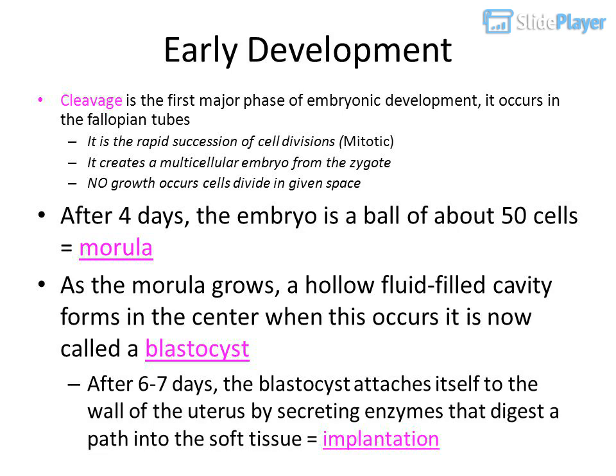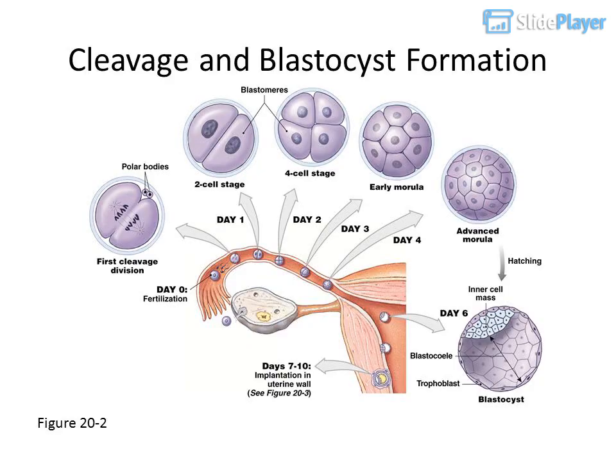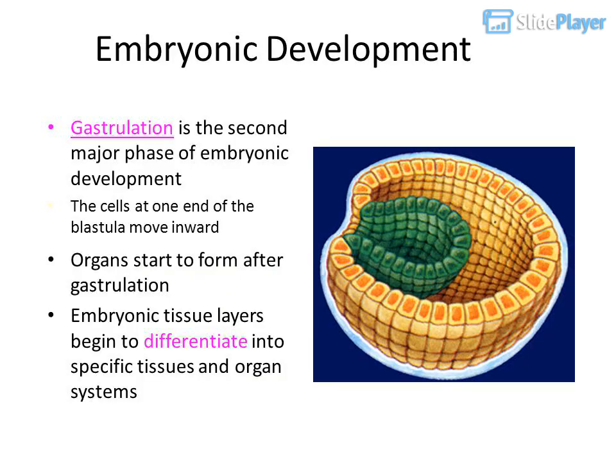When a hollow fluid-filled cavity forms in the center of the morula, it is now called a blastocyst. After six to seven days, the blastocyst attaches itself to the wall of the uterus by secreting enzymes that digest a path into the soft tissue — this is called implantation.